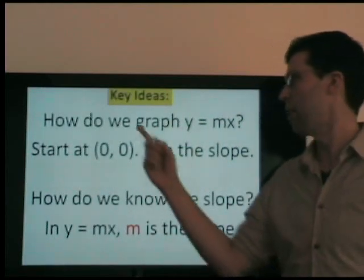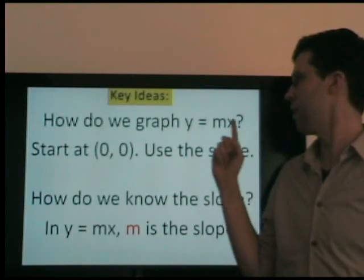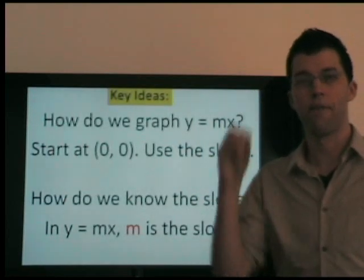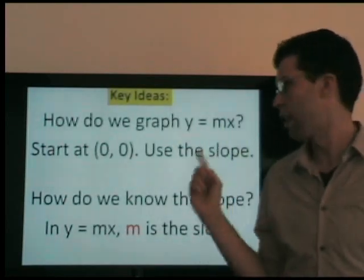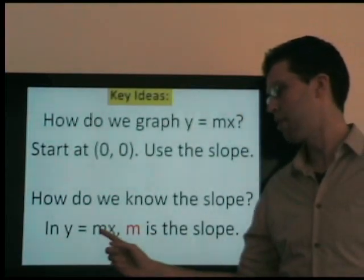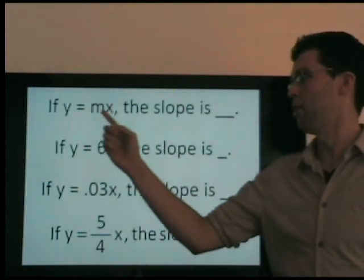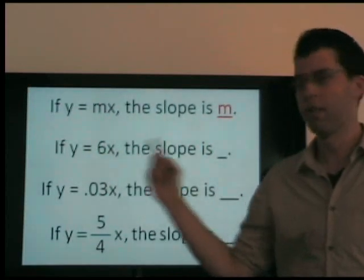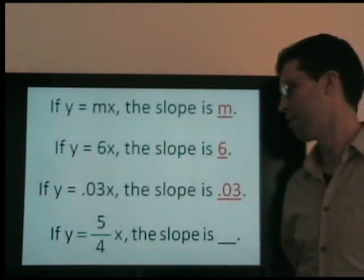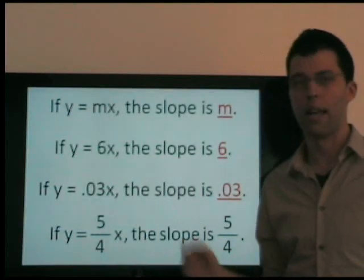How do we graph these equations? We start at (0, 0). Why? Because when x is 0, no matter what number is here, 0 times any number equals 0. From (0, 0), we use the slope to quickly plot more points. The slope is whatever number is multiplying x. It could be a whole number, fraction, or decimal — whatever it is, the slope is this number that's multiplying x.